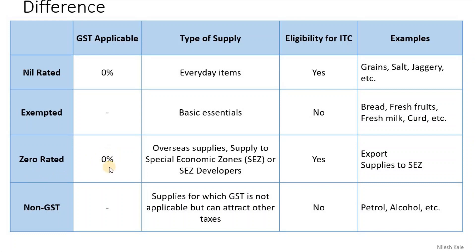Zero rated — zero percent. Type of supply? Overseas supplies like exports and supply to SEZ or SEZ developers. Eligibility for ITC? Yes. Examples are export supplies to SEZ unit or SEZ developer.